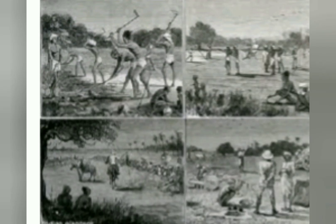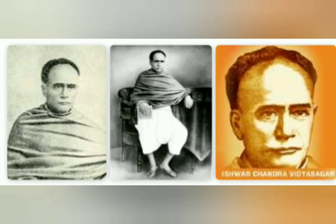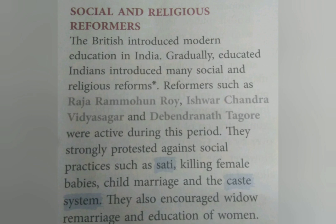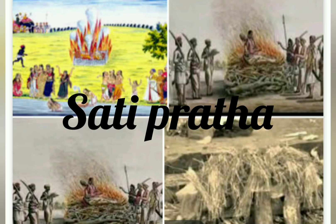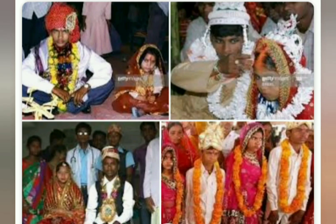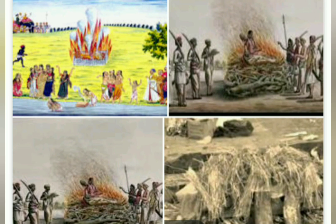The educated Indians introduced many social and religious reforms. Raja Ram Mohan Roy, Ishwarchandra Vidyasagar and Devendranath Tagore were very educated people active during this time. They strongly protested against bad social practices like Sati Pratha, killing of female babies, child marriage and the caste system, and started educating people against them.